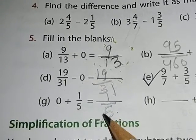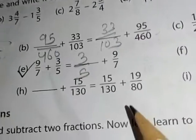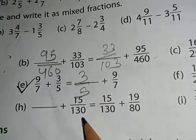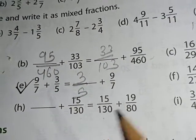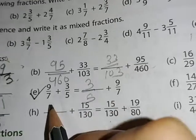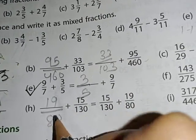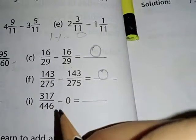Here, 15 upon 130 is given. This number is not given here, so if we write 19 upon 80, both the sides become equal.